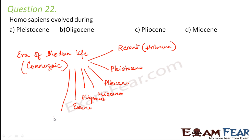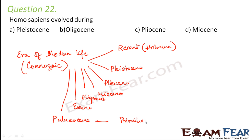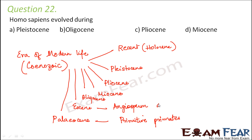The most primitive period was Paleocene. During Paleocene, only primitive primates evolved. During the Eocene period, angiosperm dominance was seen — too many angiosperms, the flowering plants. So the Eocene is known as the angiosperm dominance period.